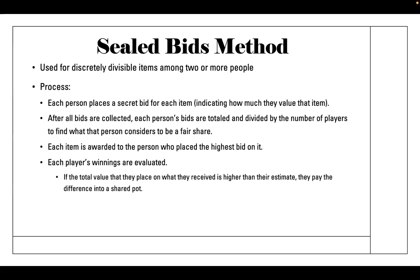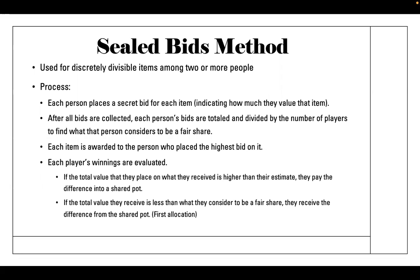For example, say I value the whole pile at $100,000, and I win things totaling $120,000 in value. Then I have to put $20,000 into the pot, because my fair share was $100,000 and I received $120,000. Conversely, if my fair share is $100,000 but I only received $60,000, I receive $40,000 from the shared pot. That first allocation ensures everyone has their fair share. Any money left in the pot afterward is divided equally among all people — that's the second allocation.